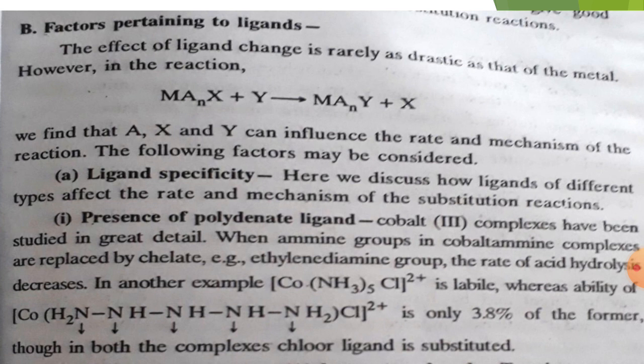The ligands A, X, and Y can influence the rate and mechanism of the reaction. First is the ligand specificity. The presence of polydentate ligands, or chelate ethylene diamine groups that replace, decreases the rate of acid hydrolysis.